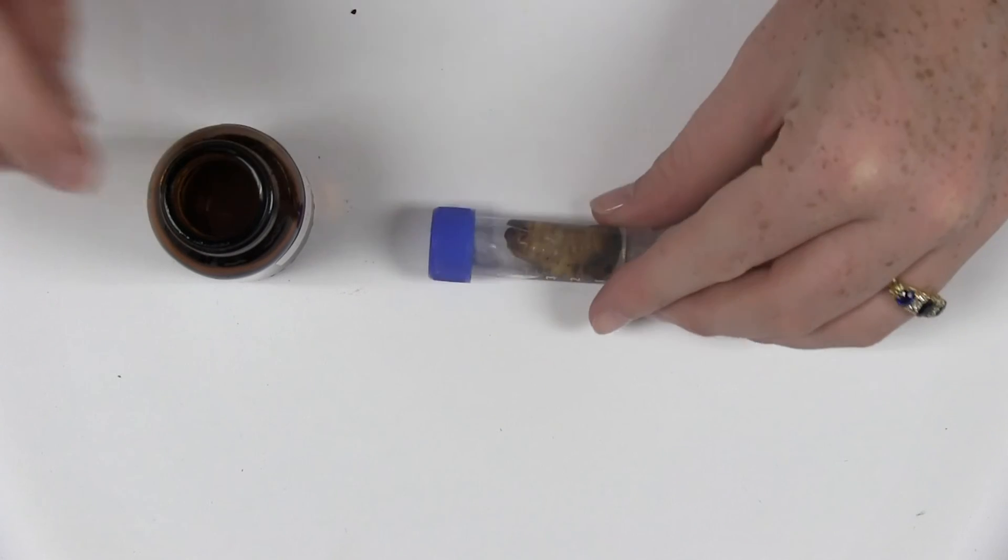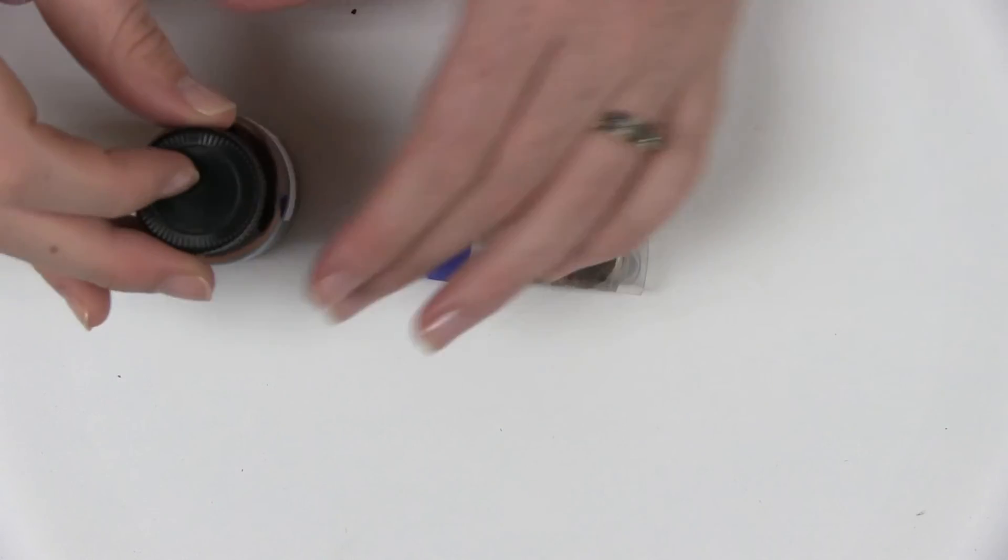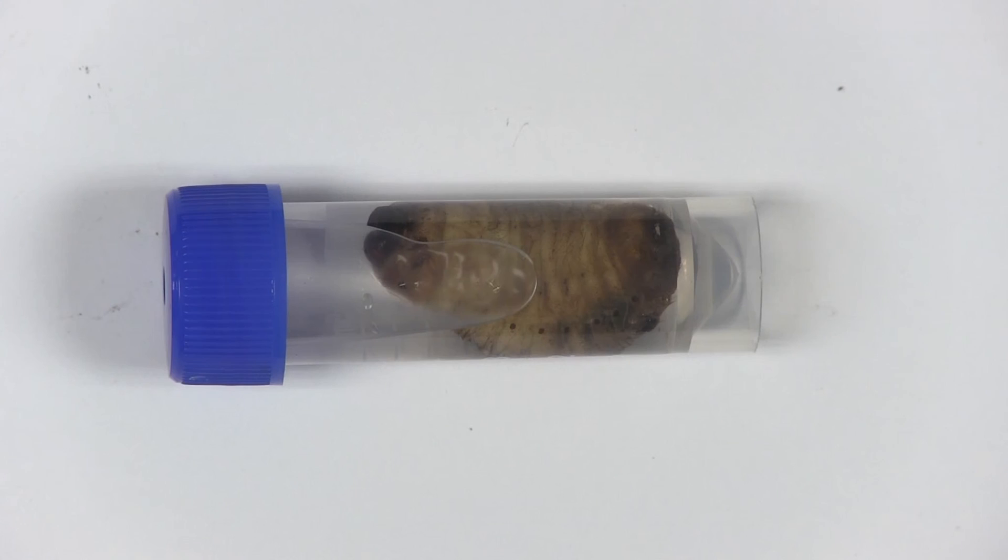For any wet material, make sure that there is a label inside the tube as well as pinned next to the tube in your insect collection. Thank you for watching our video on the wet storage technique.